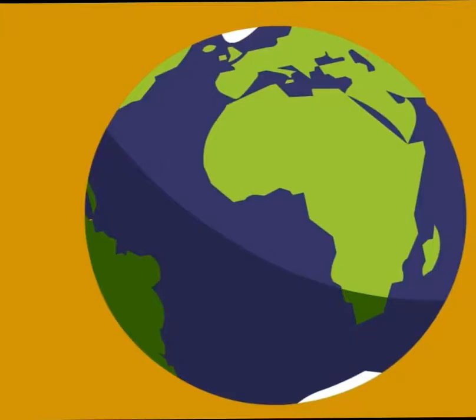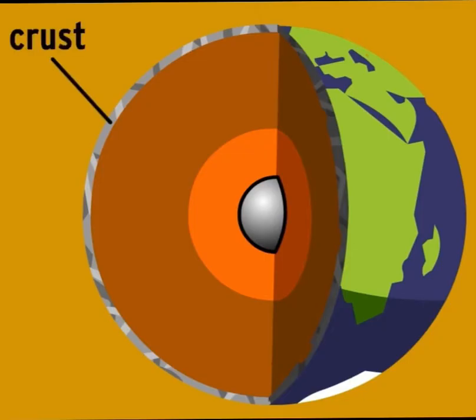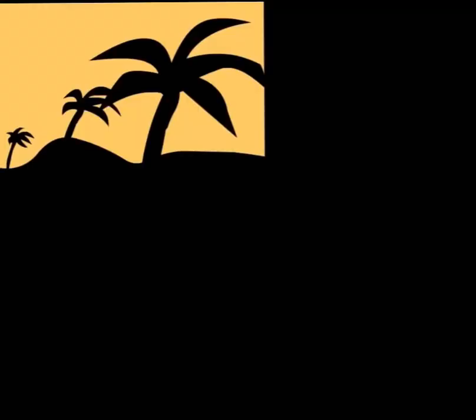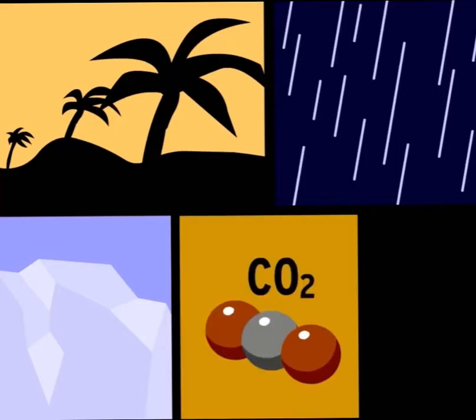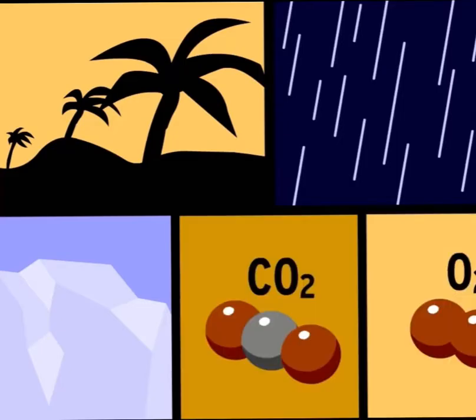It all starts with the rocks and minerals that form the Earth's crust. Things like wind, water, ice, carbon dioxide, and oxygen break the crust down in two processes called weathering and erosion.